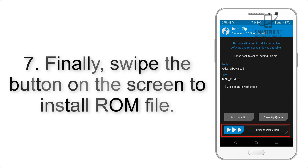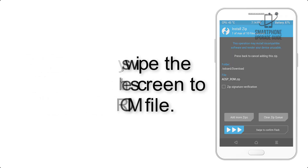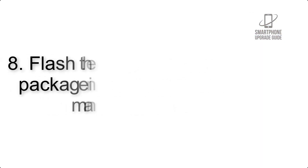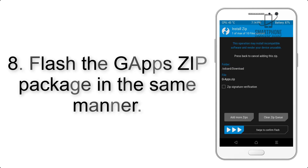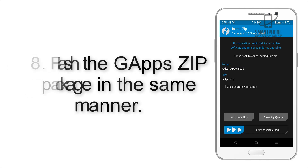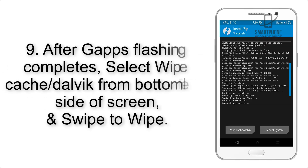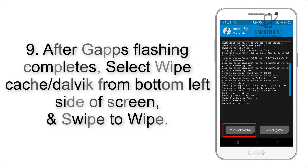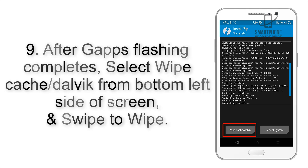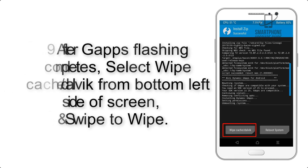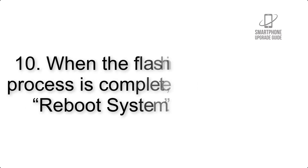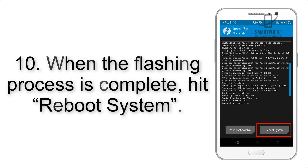Step 7: Swipe the button on the screen to install the ROM file. Step 8: Flash the gapps zip package in the same manner. Step 9: After gapps flashing completes, select Wipe Cache and Dalvik from the bottom left side of the screen and swipe to wipe.